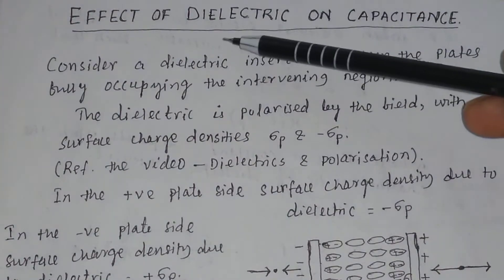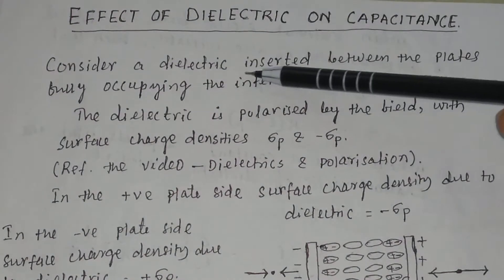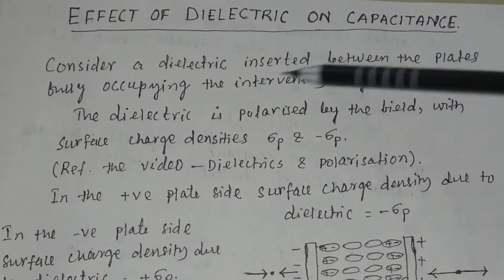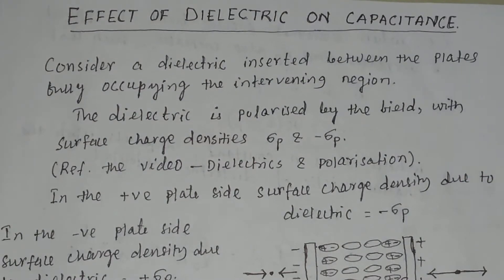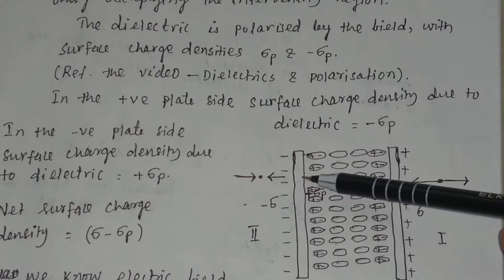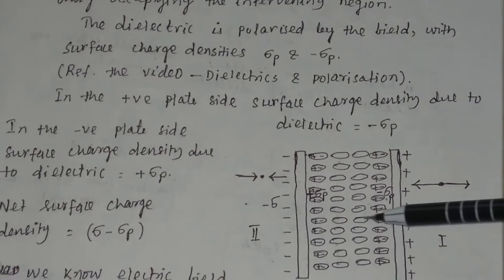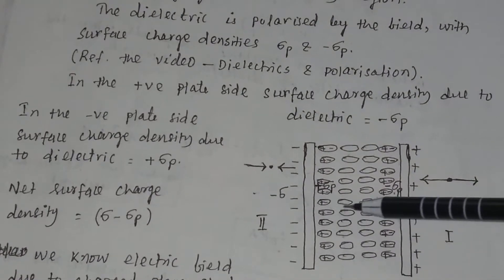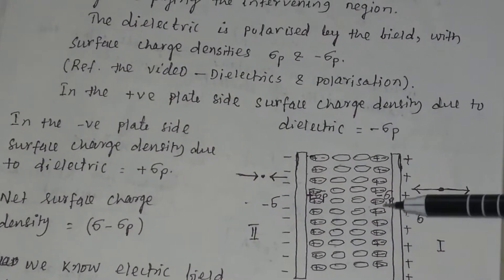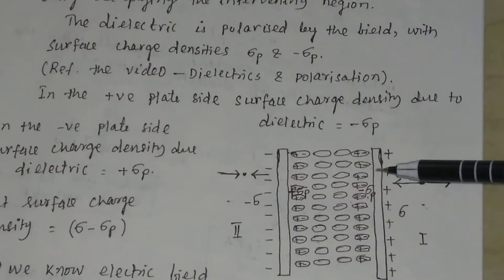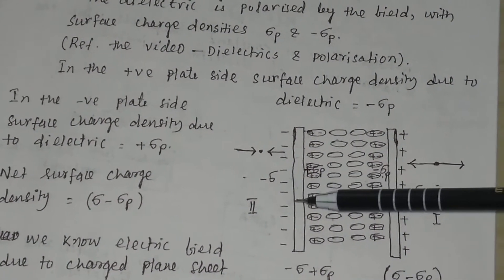Today we will discuss the effect of dielectric on capacitance. Consider a dielectric inserted between the plates, fully occupying the intervening region. There are two plates of the parallel plate capacitor and the region between the two plates is fully occupied by the dielectric. This is the positive charged plate and this is the negatively charged plate.